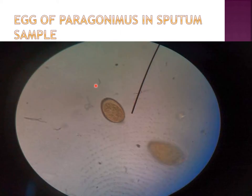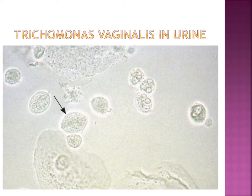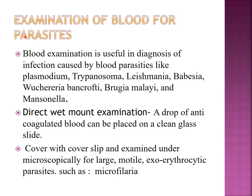These are Isospora belli and they look like this. Eggs of Paragonimus can be seen in the sputum sample. Urine examination can be done for trophozoites of Trichomonas — Trichomonas vaginalis — identified by their motility.